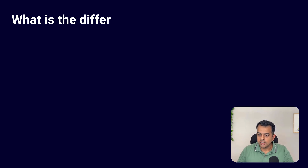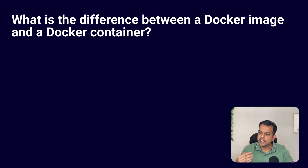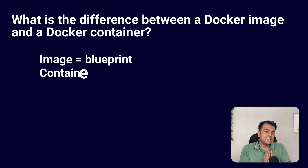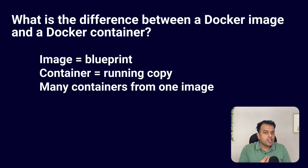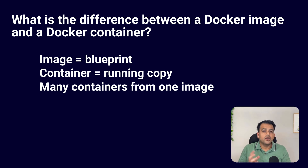Then we got a Docker question. This interview is more about advanced Java and advanced deployment features — more like a DevOps role. The question was: what is the difference between a Docker image and a Docker container? A Docker image is a blueprint containing the code, JVM libraries, and dependencies. A container is a running instance of the image, and one image can create multiple containers. Images are stored in registries; containers run on the host. Images are read-only while containers have a writable layer.